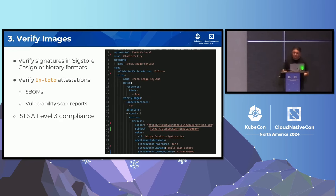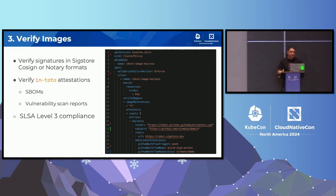The third policy is verifying images. Kyverno integrates with both Sigstore Cosign and Notary — Notary is a CNCF project and Sigstore is part of OpenSSF, both part of the Linux Foundation. These projects allow you to sign your images, and Kyverno can verify image signatures but also verify attestations in in-toto format. This can be done at admission control and also for background scanning. For example, you can write a policy to find JVM versions in your cluster through SBOMs — very powerful use cases.